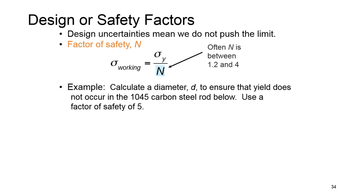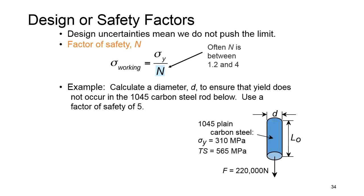Let's look at this example: we want to calculate the diameter for a bar made of carbon steel given yield point stress, tensile strength, and applied force. We want to ensure that yielding does not occur, considering a factor of safety equal to 5. We use the working stress relation with the yield point strength divided by the factor of safety. The tensile strength is not used for this calculation.